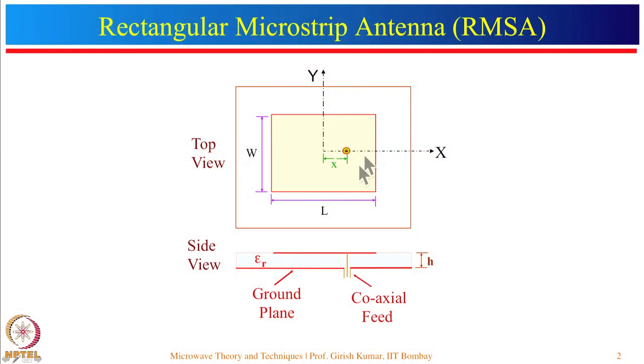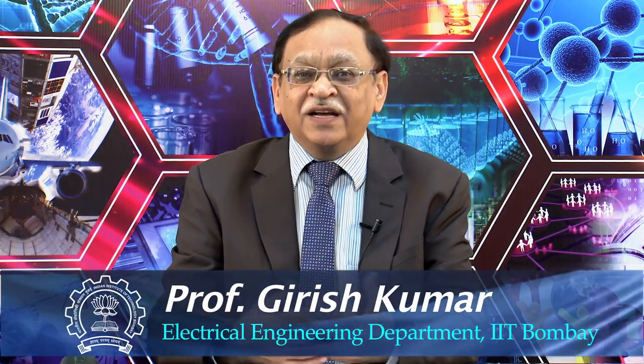Welcome to today's lecture on microstrip antennas. A rectangular microstrip antenna consists of a ground plane, a substrate on top, and a rectangular patch on top of the substrate. This looks very similar to microwave circuits like power dividers, couplers, and filters. In microwave circuits we send signals from point A to B on the PCB without radiation, whereas in a microstrip antenna we want the patch to radiate into free space.